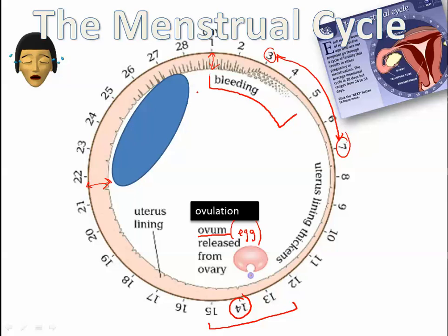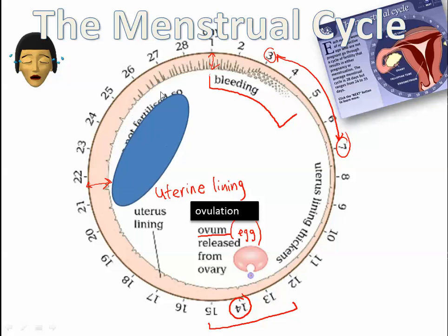This is the uterus lining, also called the uterine lining, and it's getting thicker as time goes on. This is why the cycle is a monthly cycle — 28 days, though that's also an average length of the cycle. But if the egg is not fertilized, then this lining breaks down.